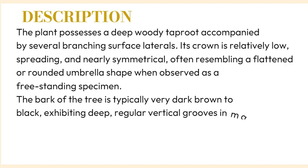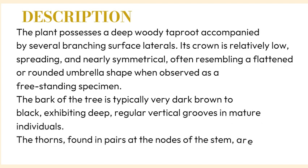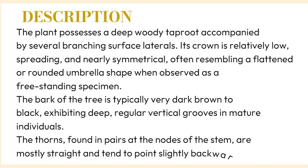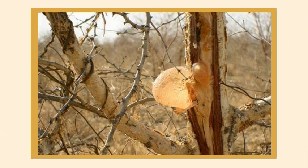The bark of the tree is typically very dark brown to black, exhibiting deep, regular vertical grooves in mature individuals. The thorns, found in pairs at the nodes of the stem, are mostly straight and tend to point slightly backwards.